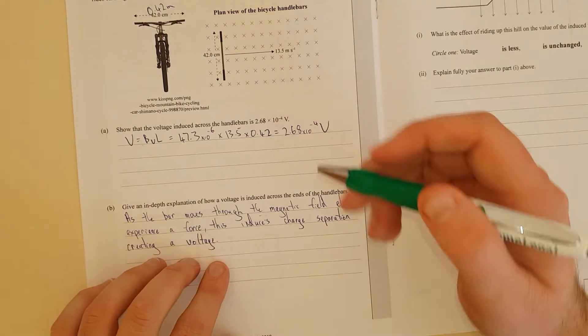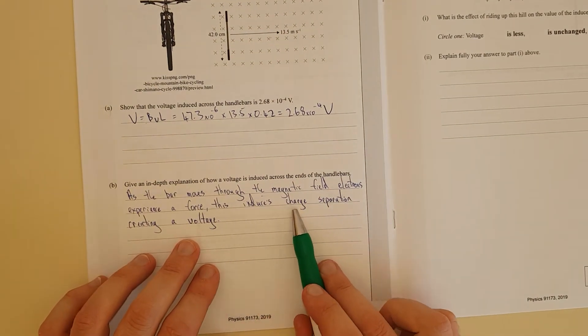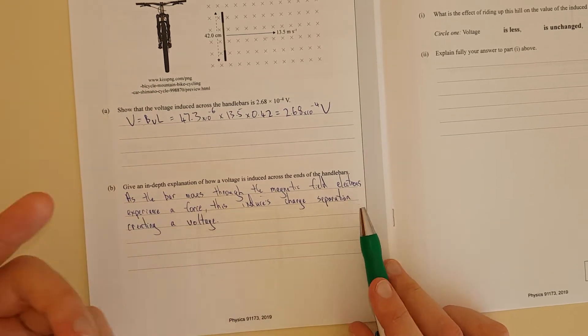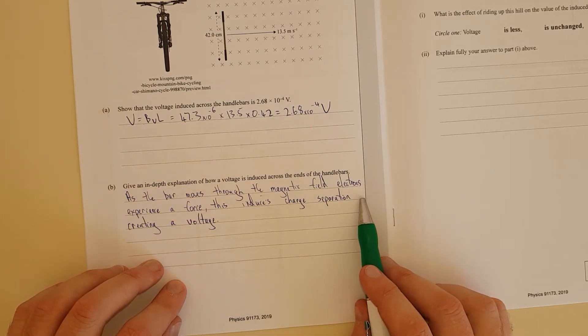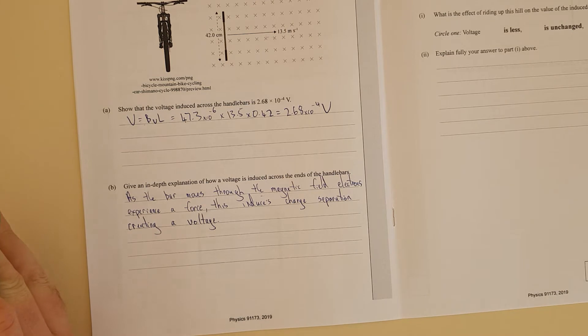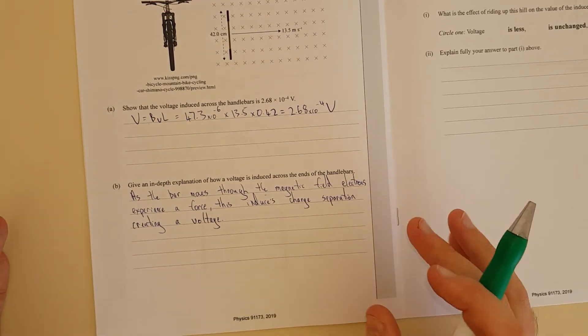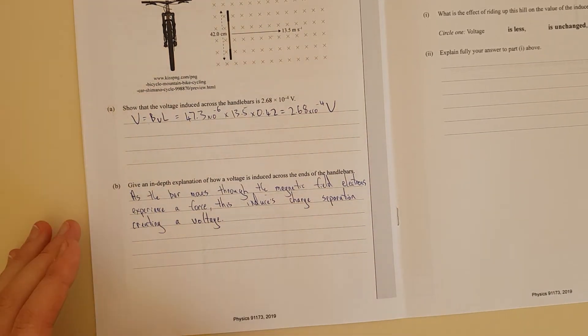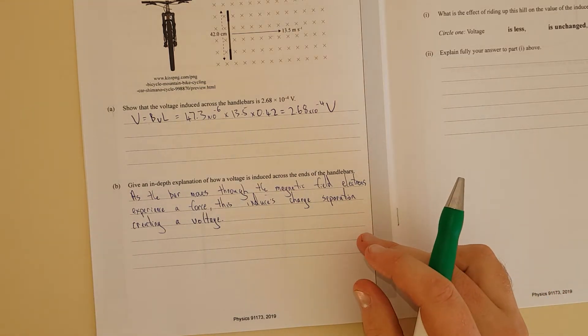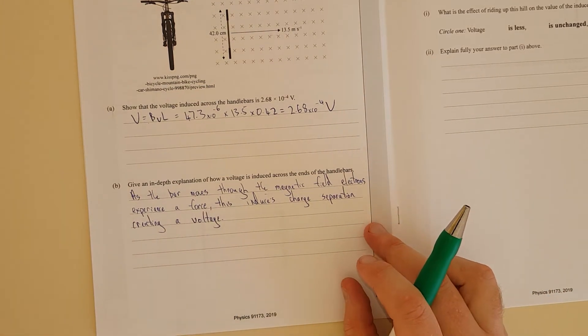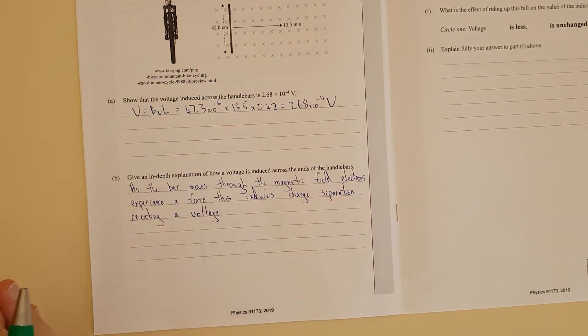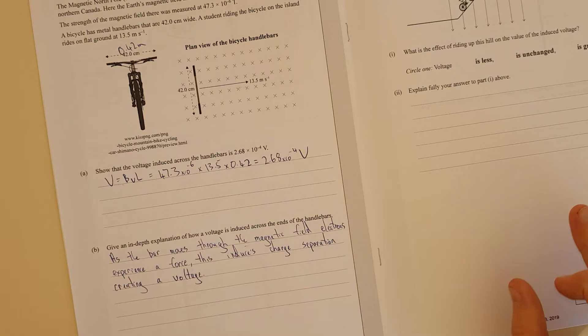They experience a force. This induces charge separation. These three words are key. You need to have them basically in that order. You can't say it causes current to flow. Because what it does is it separates the electron. It moves all the electrons to one side of the bar. That's called charge separation. Charge is now separated. And that is the definition of a voltage. That is how you make voltage. Voltage is just charge separation. You shuffle all the electrons to one side.